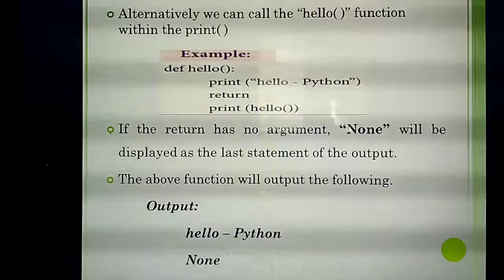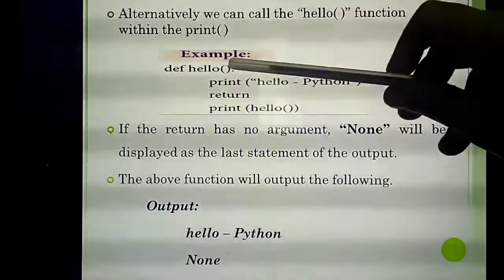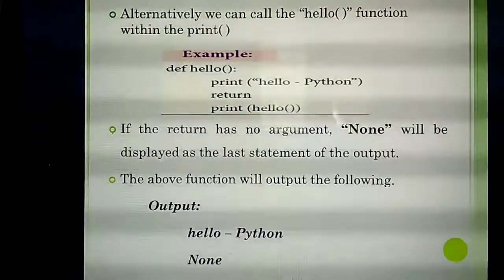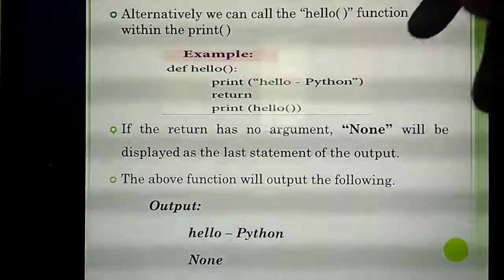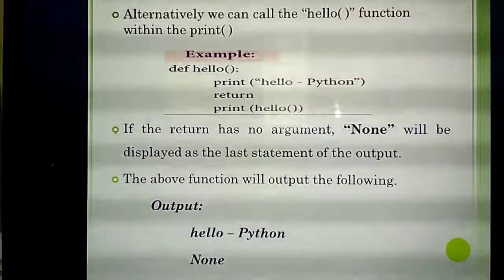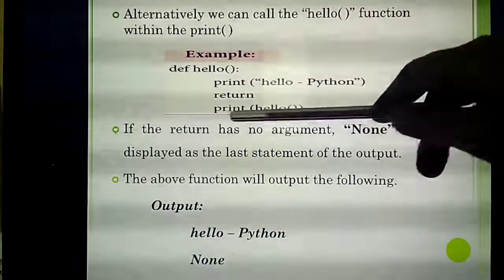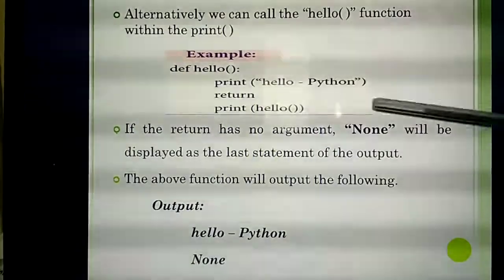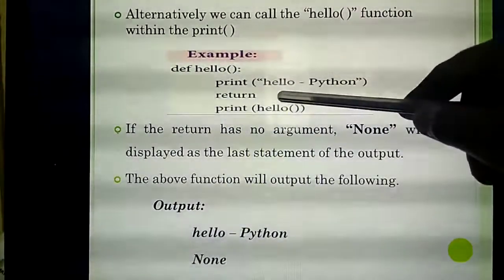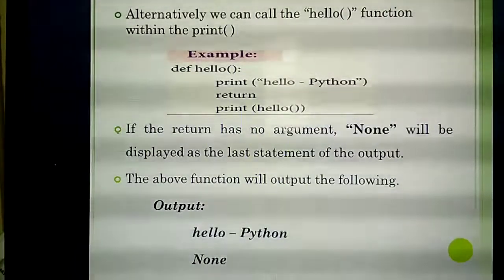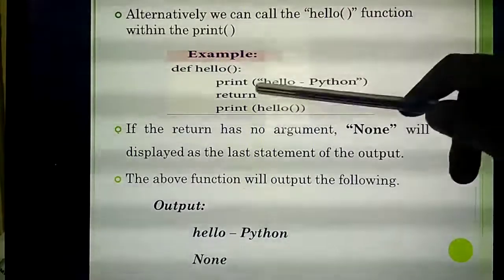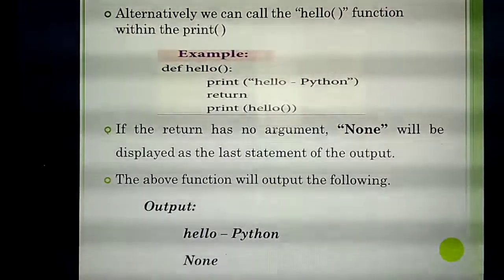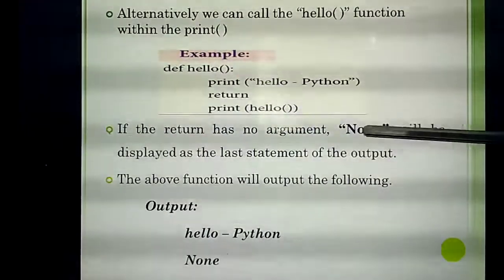If you give a return statement with no arguments, the output will be 'None'. After the return, even if you write another print statement, you won't get output because the return has no statements, so the output is None.